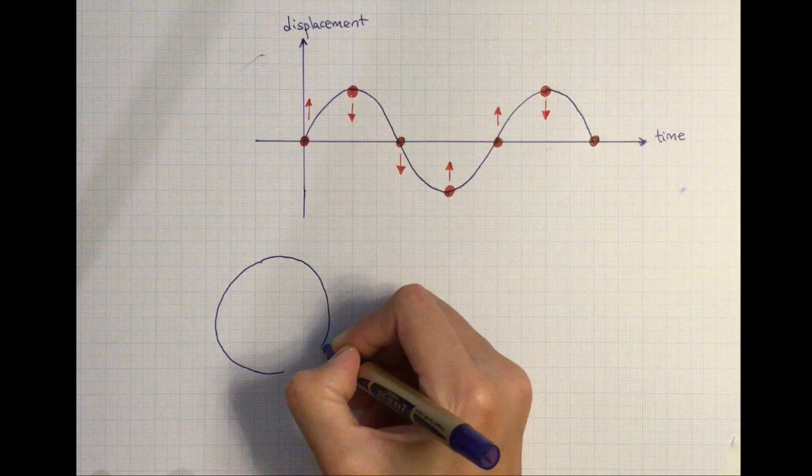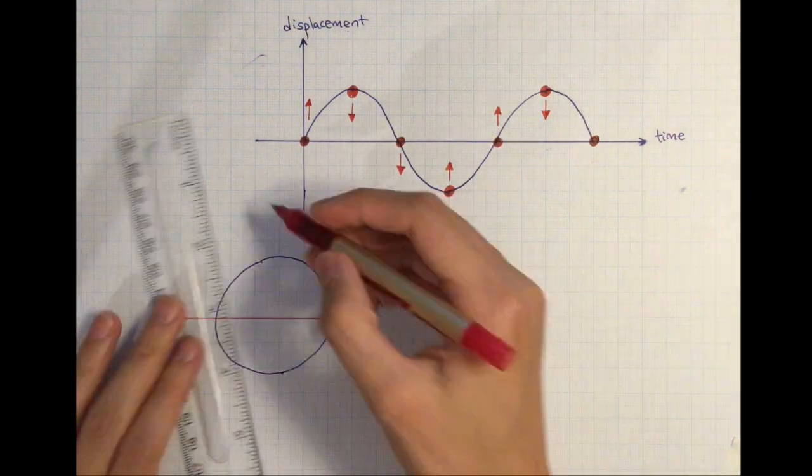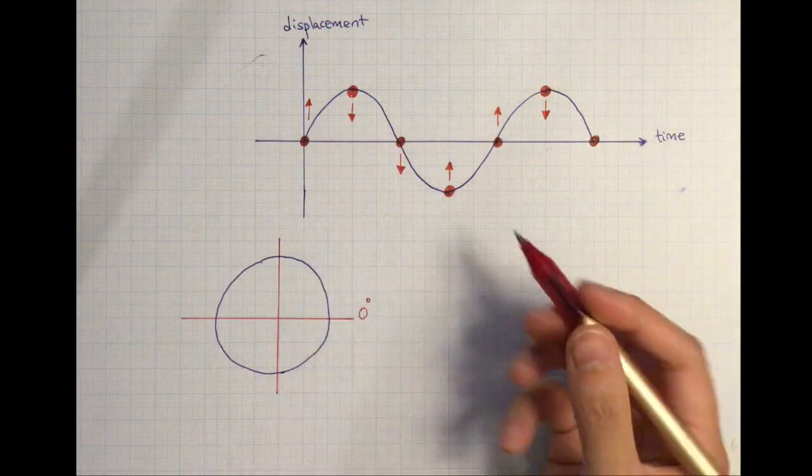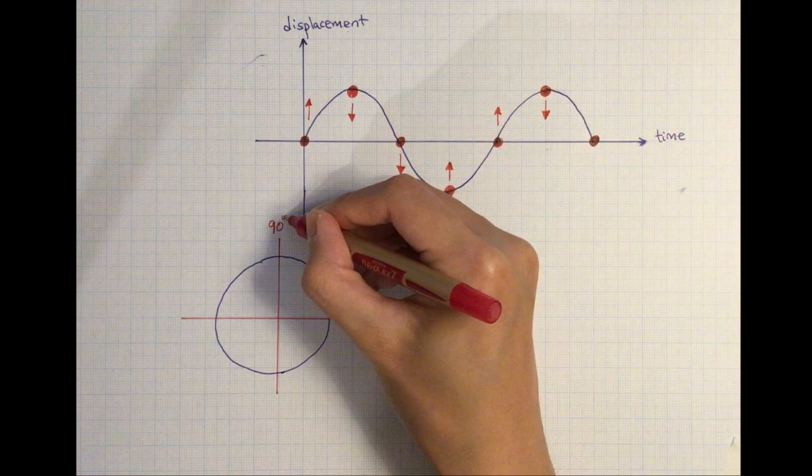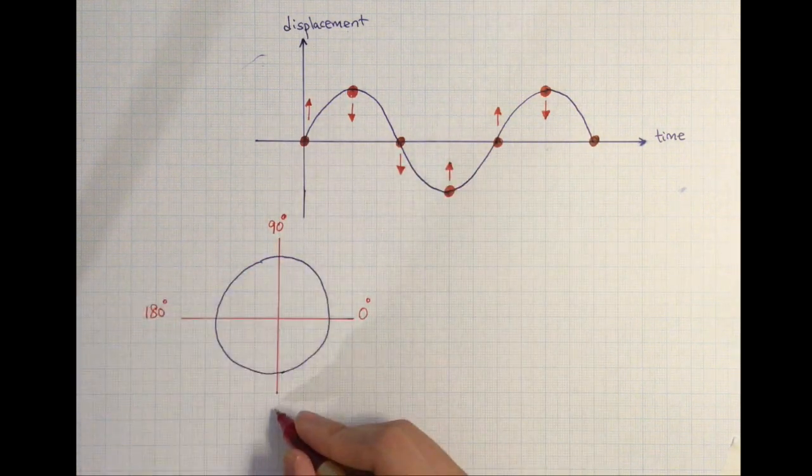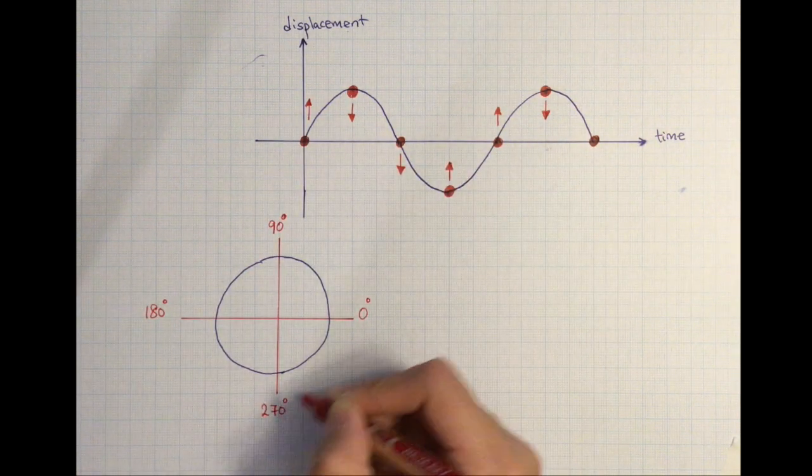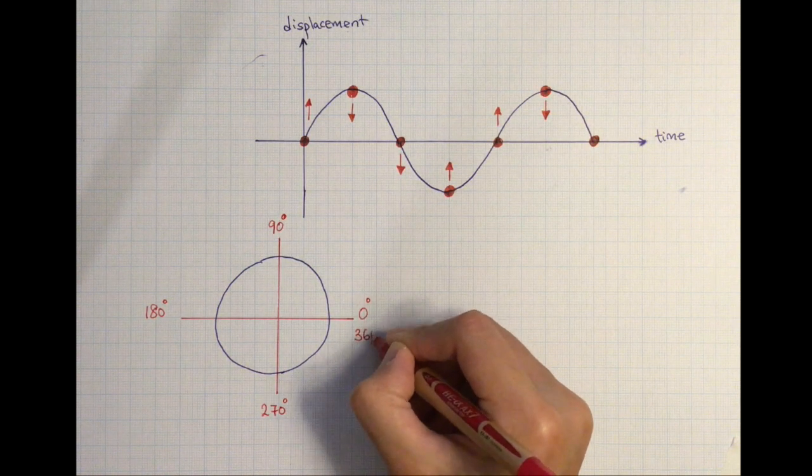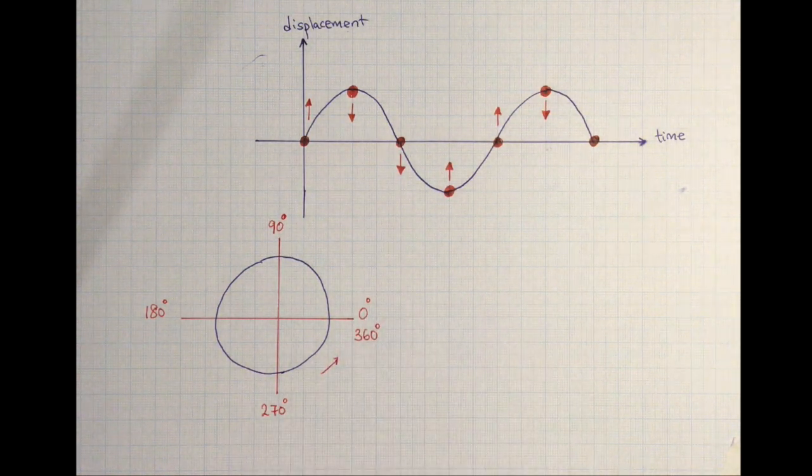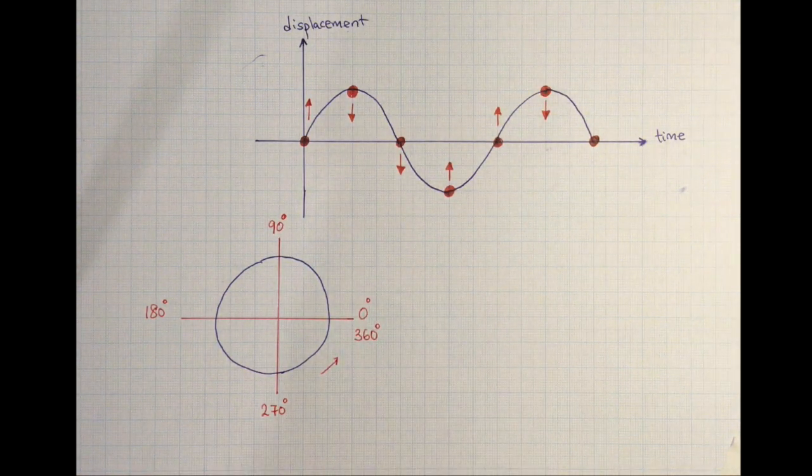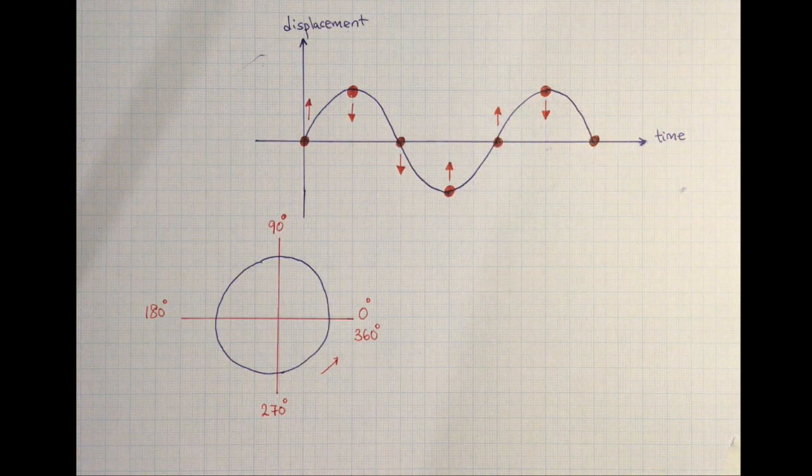Draw a circle and divide it into four quarters. If the origin is zero degrees, after a quarter that's 90 degrees. Half a circle is 180 degrees. Three quarters, that's 270 degrees, and coming around to a full circle, we have 360 degrees.